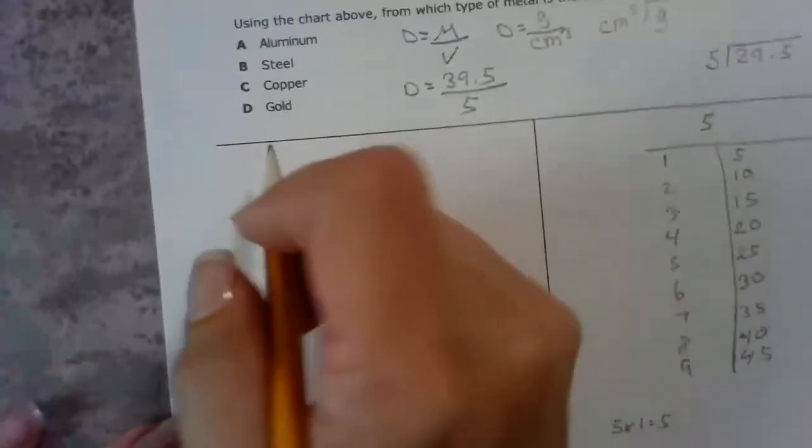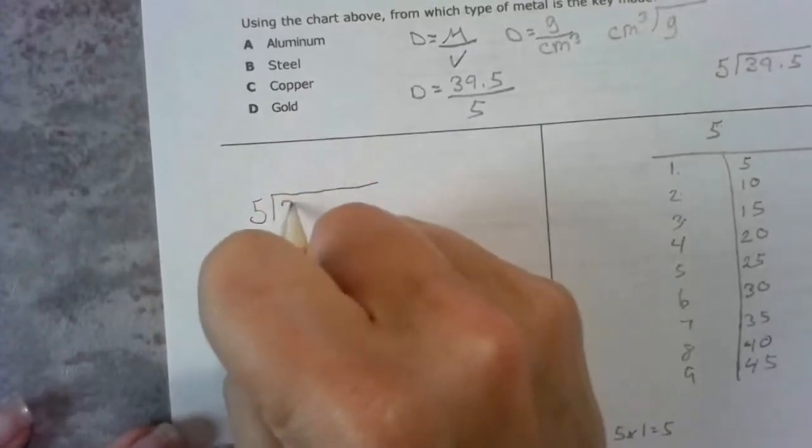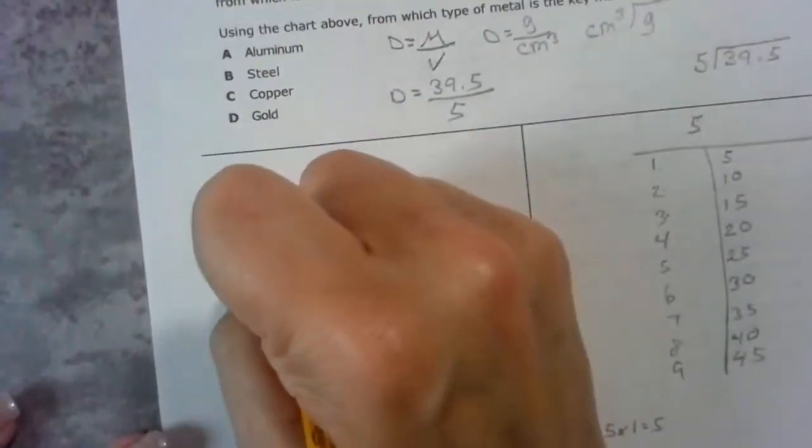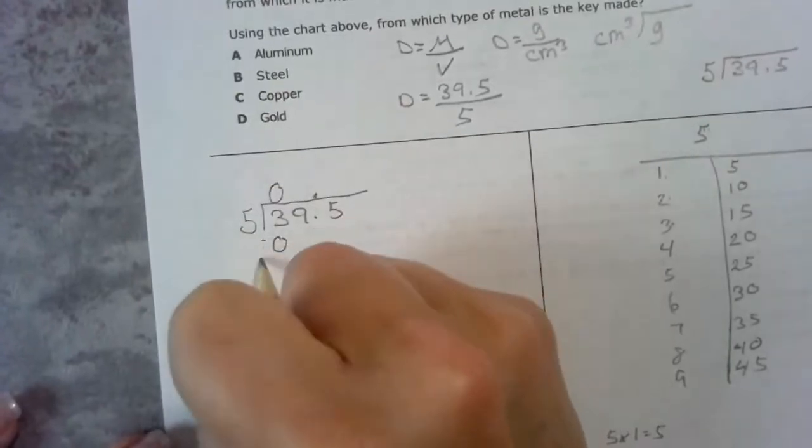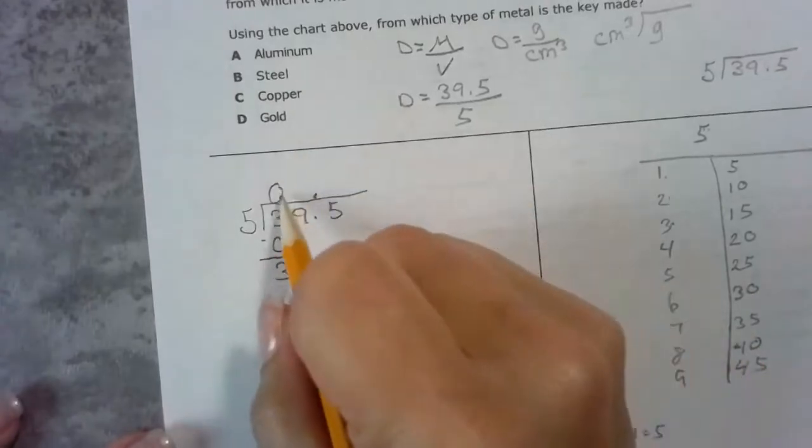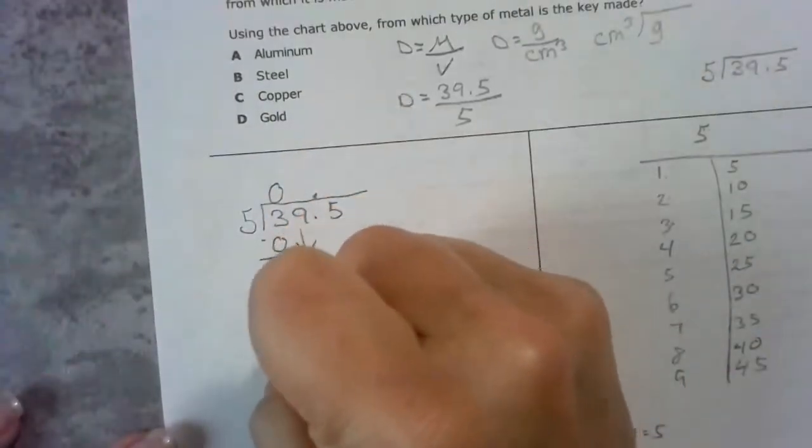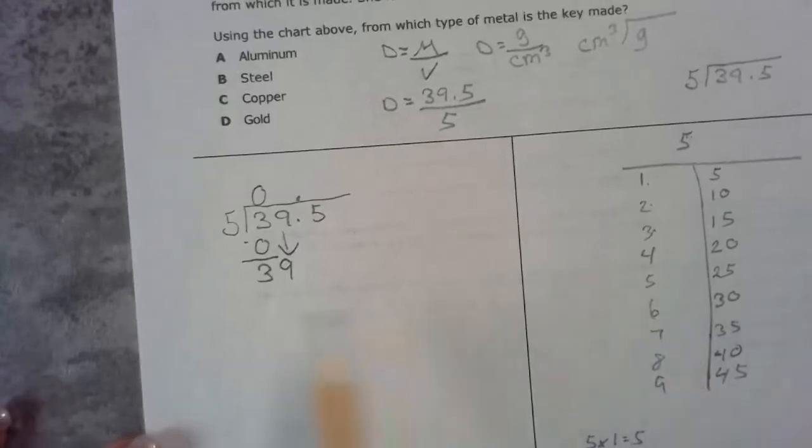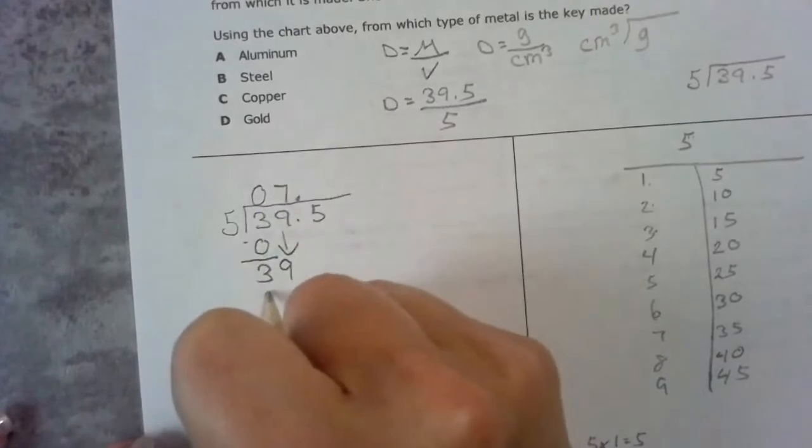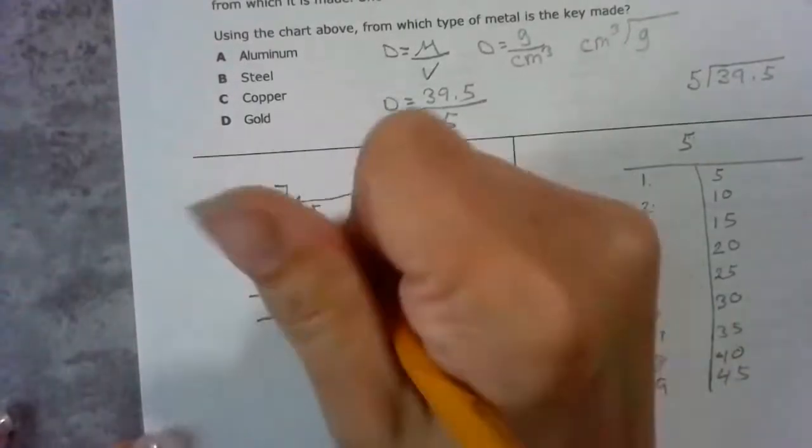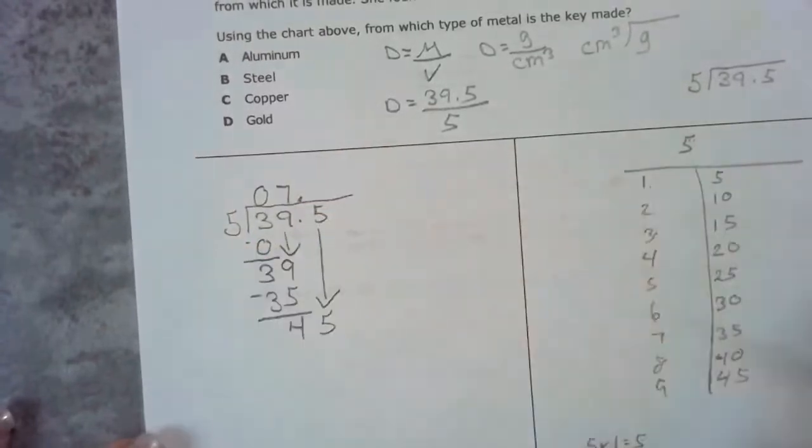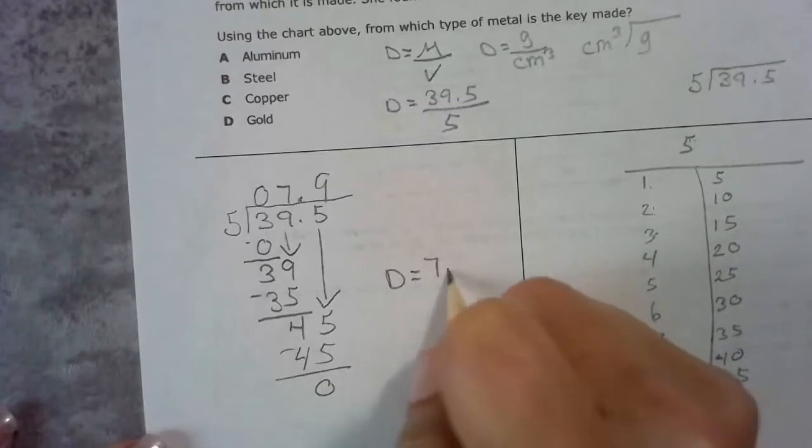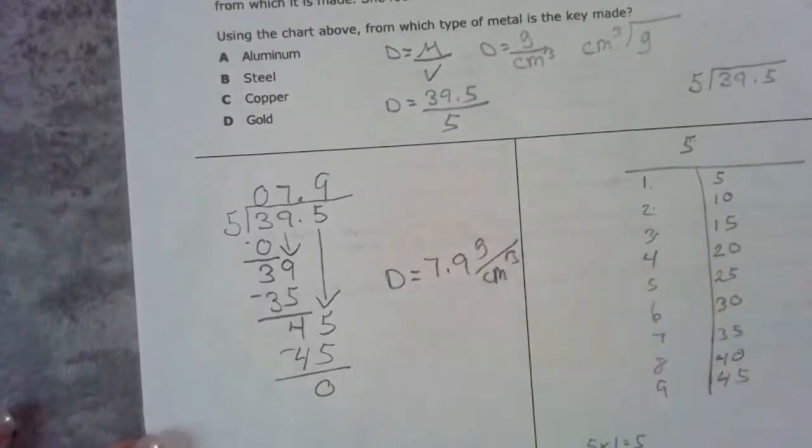I'm going to do my math. First thing I'm going to do is move that decimal point upstairs so I don't make a mistake. 5 cannot go into 3. I'm dealing with my place value. One of the most common mistakes is you may know the math, you may know the formula, but you're messing up on the division. I have 39. It can go 7 times, then 9 times. My density is 7.9 grams per cubic centimeter.